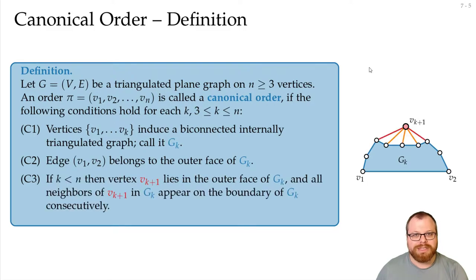And the third condition is, if we look at the next vertex that we want to add. That lies in the outer face of this graph, and all the neighbors of it appear on the boundary consecutively. That's exactly the conditions we need for our drawing algorithm that we sketched in the previous part to work.